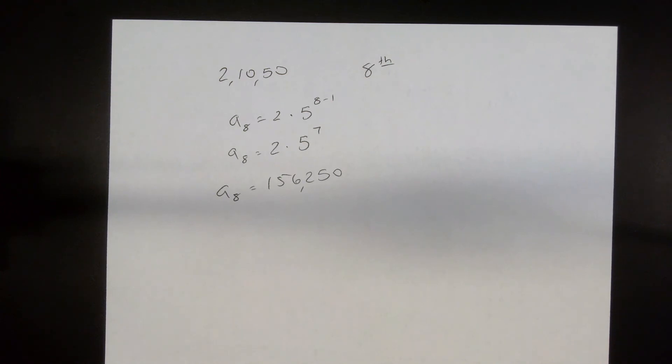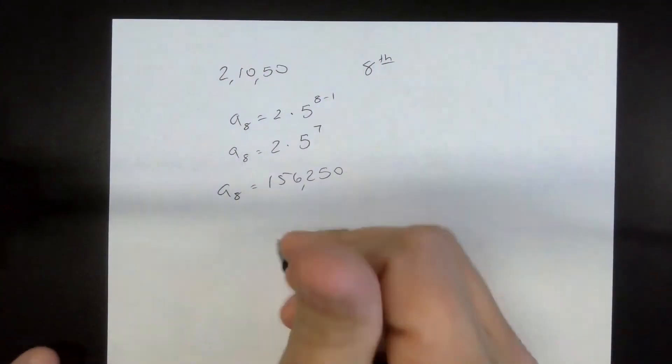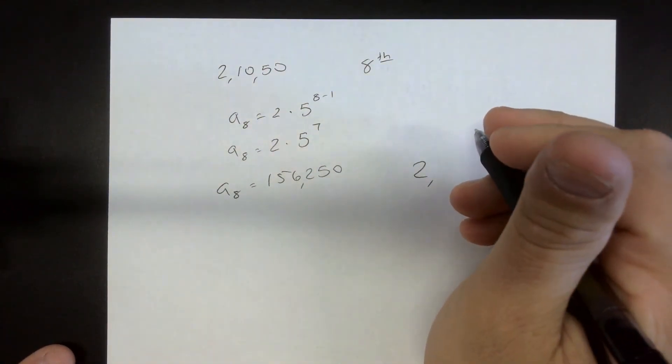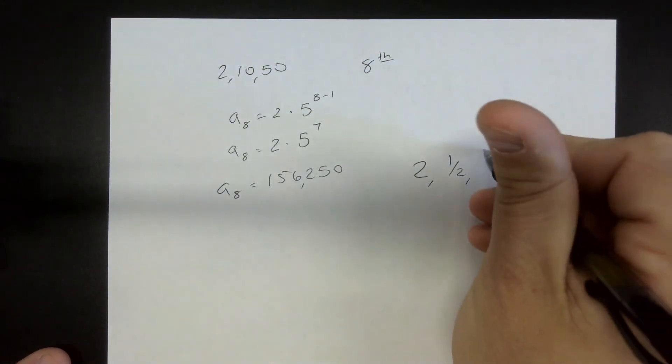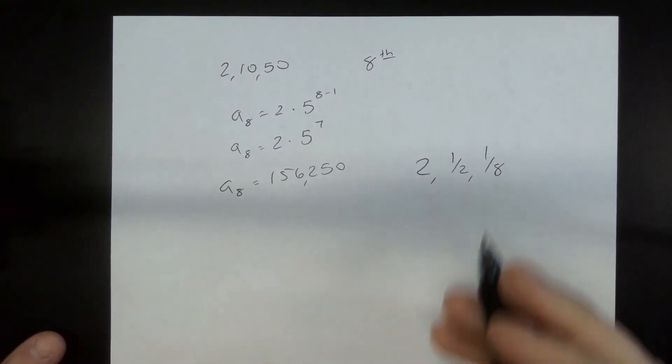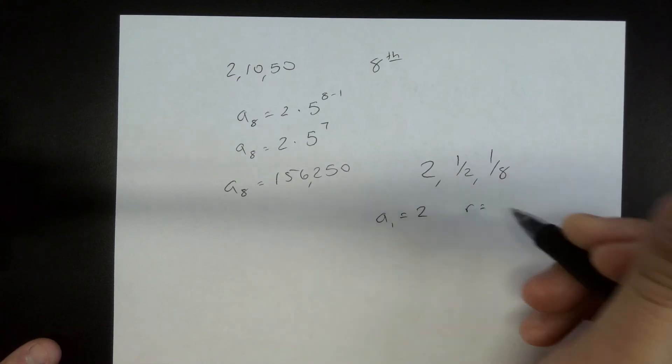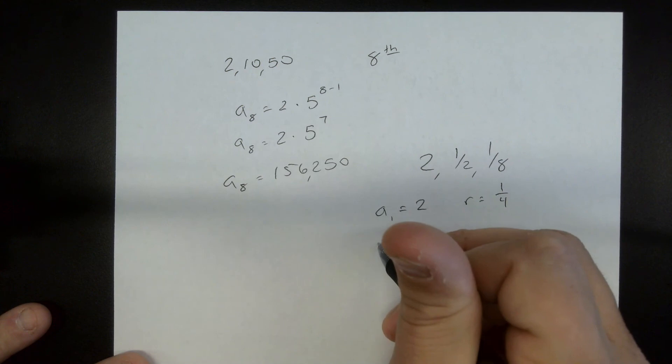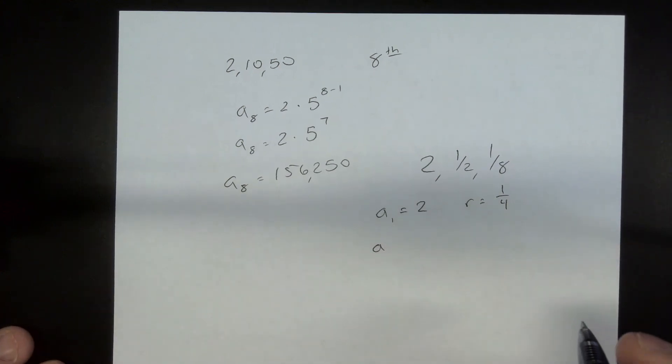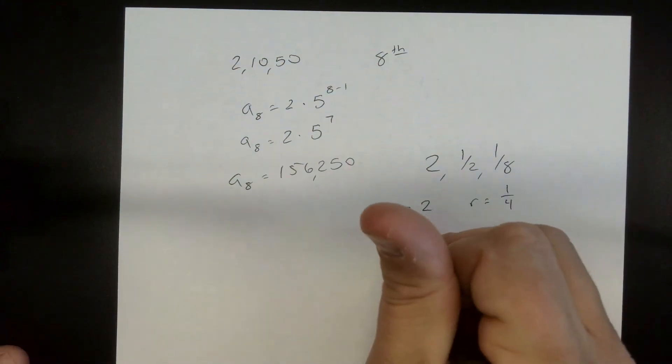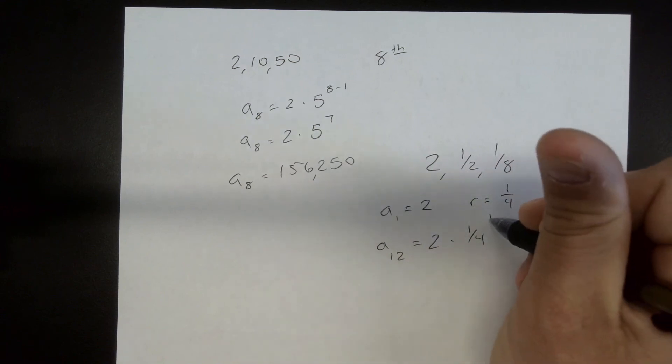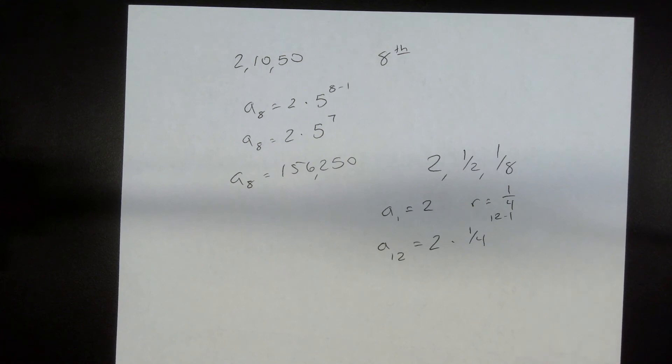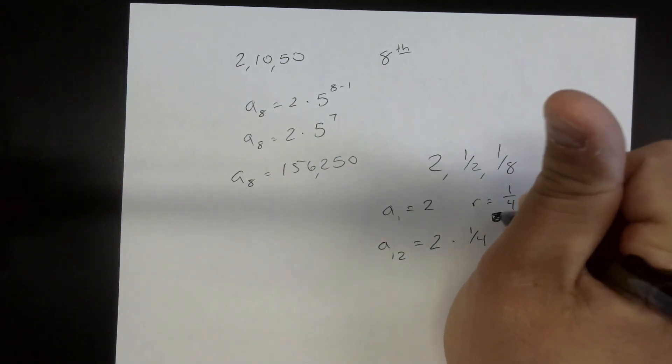So let's say we had, Jackson, what's your favorite number? Two. All right, here we go. So let's say we had 2, one-half, one-eighth. First off, what's our first term? Two. What's our ratio? It's one-fourth. So the way we're going to set this up is we're going to go a sub, what term do we want? Let's say 12. The twelfth term of the sequence, so two times one-fourth raised to the twelfth minus one. It's going to be ugly. It's probably a decimal. We're going to change it. Go to the eighth term.